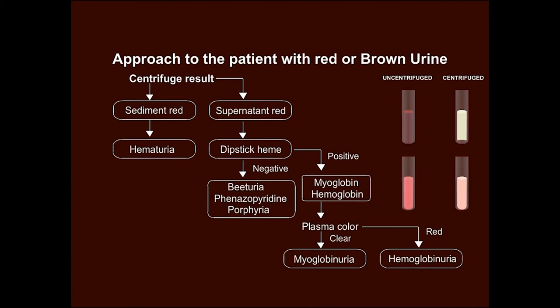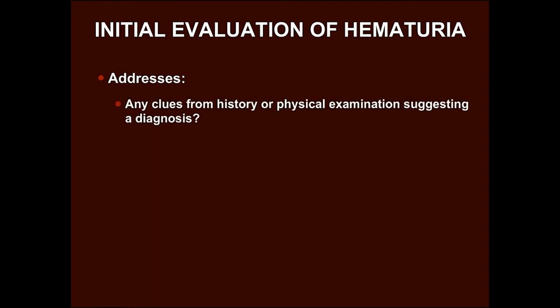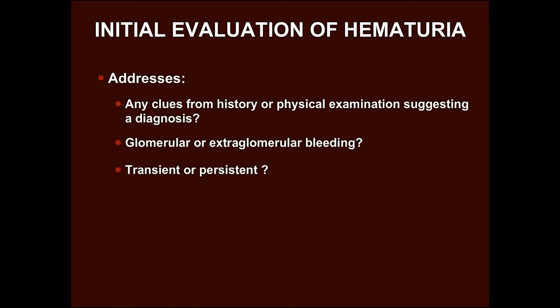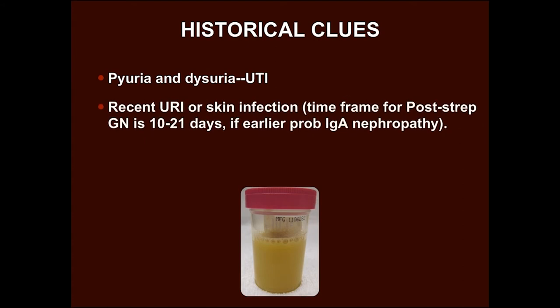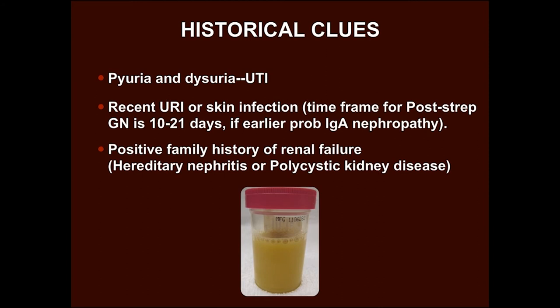Any amount of blood in urine should be taken seriously and investigated promptly. Initial evaluation of hematuria is now considered primary care. The important questions to address are: are you getting any clues from history or physical examination suggesting a diagnosis? Is the bleeding glomerular or extraglomerular? Is it transient or persistent? Presence of pyuria and dysuria will point towards urinary tract infection.